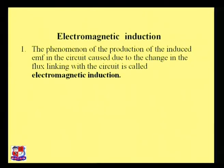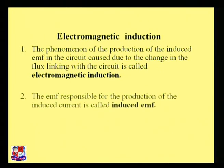The phenomenon of production of induced EMF in a circuit caused due to the change in the flux linking with the circuit is called electromagnetic induction. Changing flux is very necessary for electromagnetic induction — a constant flux cannot produce or induce any EMF. The EMF responsible for the production of the induced current is known as induced EMF.